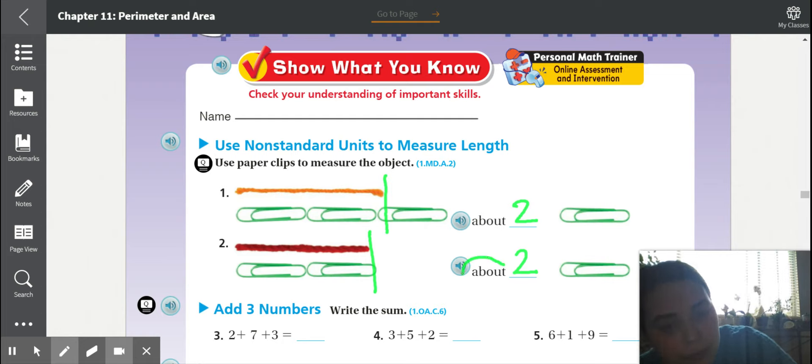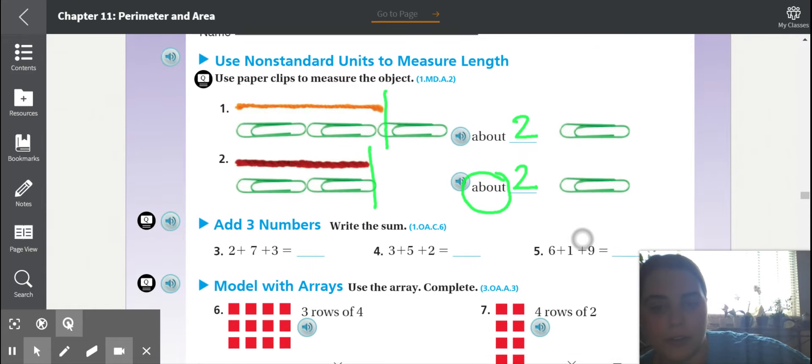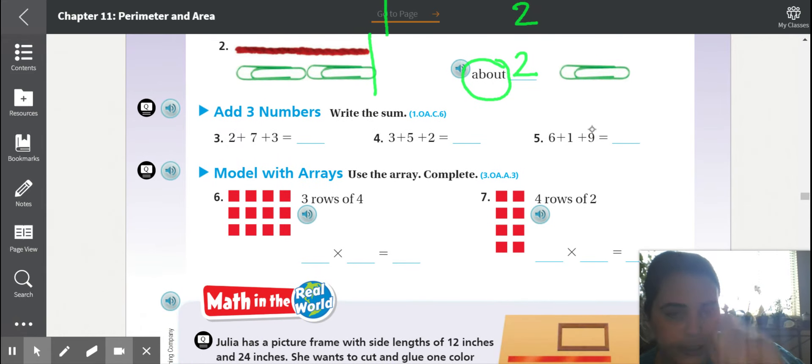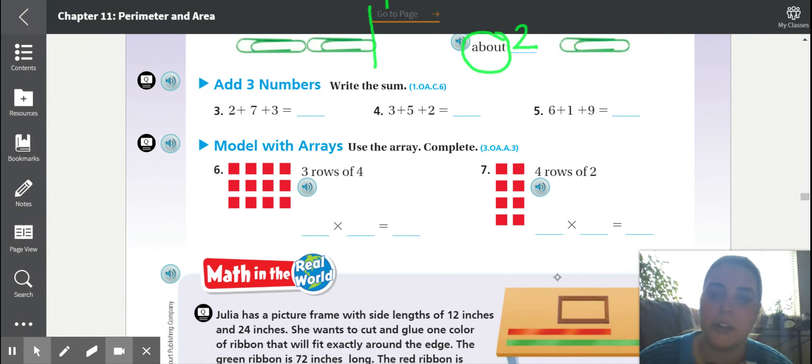If we draw another line here for number two, this piece of string is also about two paperclips long. Remember, about means not exactly. So it could be a little over, it could be a little less, about two paperclips. I want you to do numbers three, four, and five.